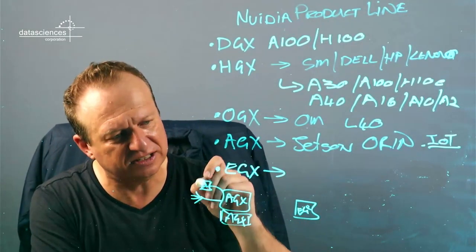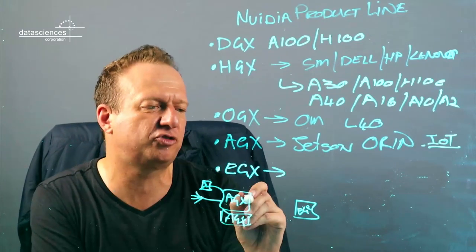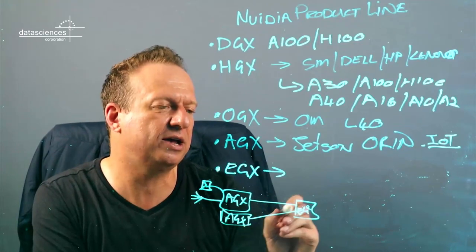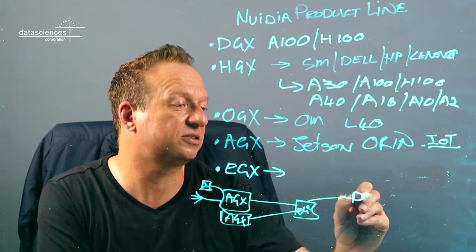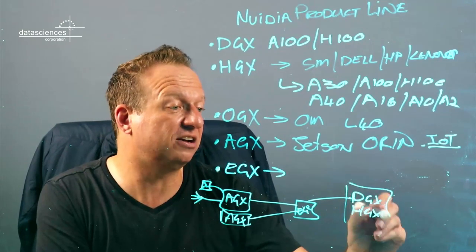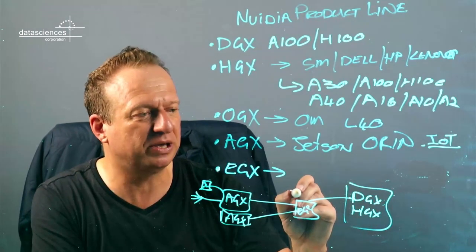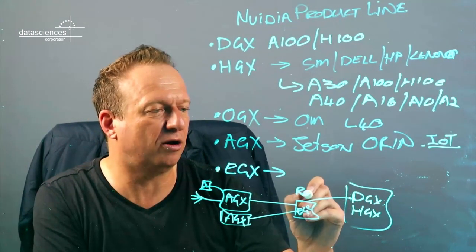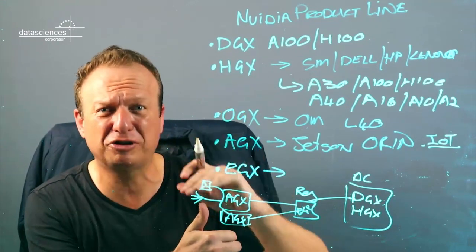Instead of having all of the sensors out there, we can bring those together to AGXs and then stream them up to a gateway. Or we might even send them into a DGX or HGX, large analytical on-prem solution that's sitting in some data center. This might be in some little regional office. This is in a DC typically, and this could be anywhere. It could be embedded into a factory, it could be stuck out in the field somewhere.